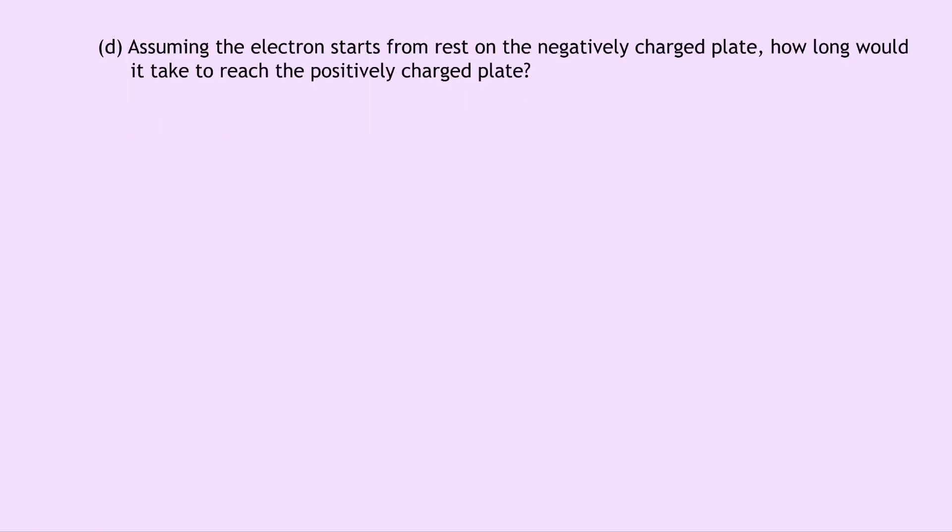Lastly, part D says assuming the electron starts from rest on the negatively charged plate, how long would it take to reach the positively charged plate? Well, based on the diagram that I sketched in part A, our electron is moving to the right to get away from the negatively charged plate, and it's asking us how long it would take to get to the positively charged plate. So we're interested in the horizontal motion of the particle here. So we're going to write down SUVAT to try and work out the time.